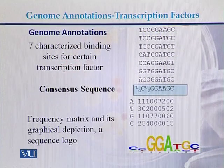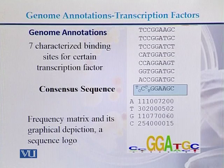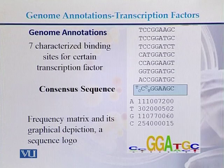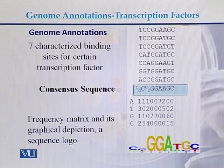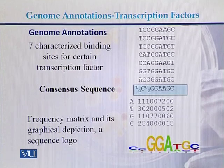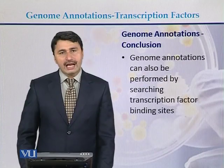Here we can see seven characterized binding sites for a specific transcription factor. The consensus sequence is shown as CCCTGGAAGC. The frequency matrix and its graphical depiction as a sequence logo are also shown, represented as CCGGAT and GC. With the help of these sequences, we can perform genome annotations.